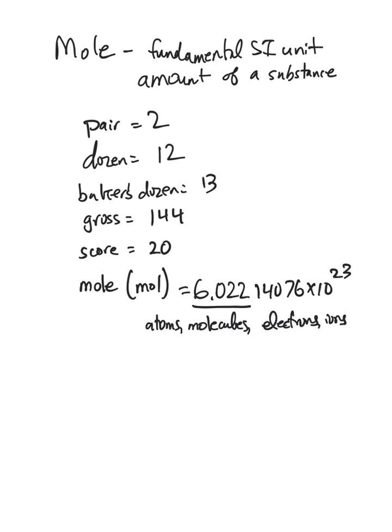Most of the time, we only need to carry this out to four sig figs. But if you need more than that, that's what it's going to be. So the mole is the fundamental SI unit of amount of substance. It's equal to 6.022 times 10 to the 23rd of whatever it is that you're talking about.